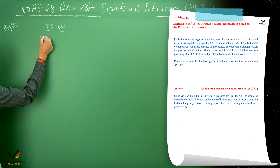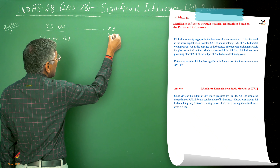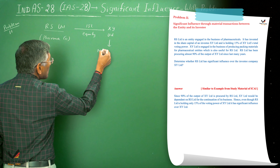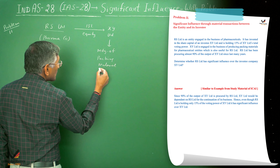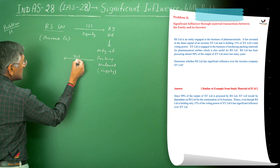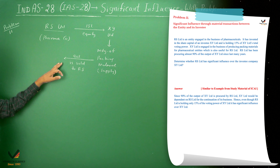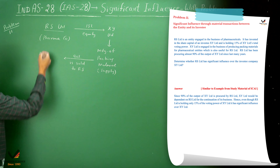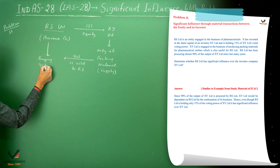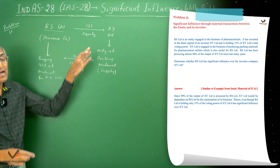Problem number 11. RS Limited is a pharmaceutical company. It has invested in 15% equity of XY Limited. XY Limited is involved in the manufacture and supply of packing material. Out of this packing material, 90% is sold by XY Limited to RS Limited. So RS Limited is purchasing 90% of the packing material from XY Limited for packing its pharma products. We need to determine whether RS has significant influence over XY.